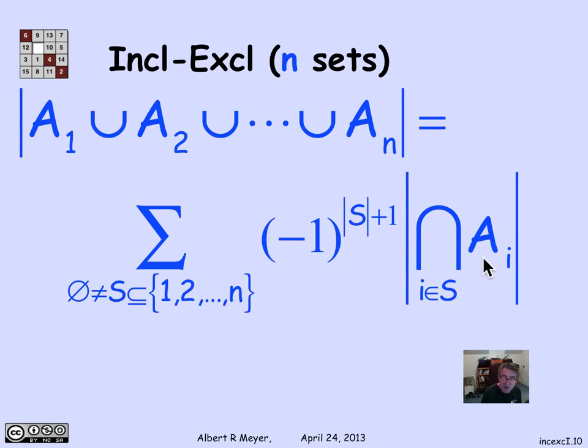Here we have an intersection over the A_i's where the i is specified by the set S of indices. And I sum up these terms over every possible non-empty set S. That is the generalized form of inclusion-exclusion for n sets.